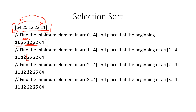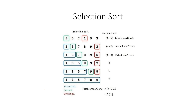We continue finding the minimum element in the shrinking range. We find 22, swap it with 25, and 22 goes to its correct position. On the next step the minimum element in that range is already in first place, so we leave it. When only 64 remains it's just one element so we do nothing.